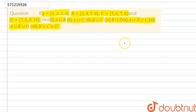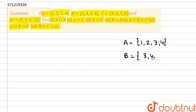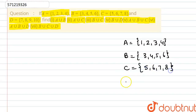We are given set A, that is {1, 2, 3, 4}. We are given B, that is {3, 4, 5, 6}. We are given C, that is {5, 6, 7, 8}. And we are also given D, that is {7, 8, 9, 10}.